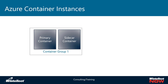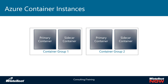Once you have that container group defined, you can also have another container group right alongside it. There is nothing in Azure that allows you to deploy these as a unit, per se — you would have to deploy a container instance with a container group and then a second container instance with a second container group. But this would allow you to have an application with the front end, say a website, running in container group one and a back end running in container group two.